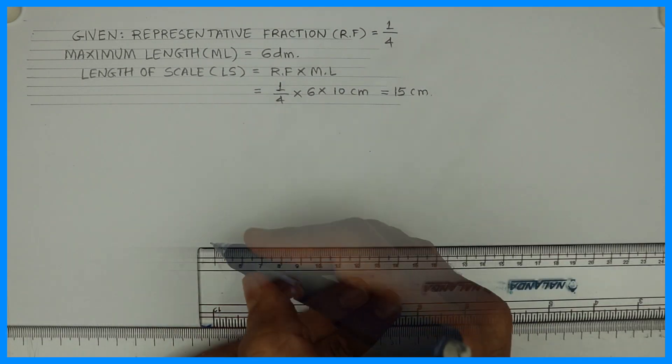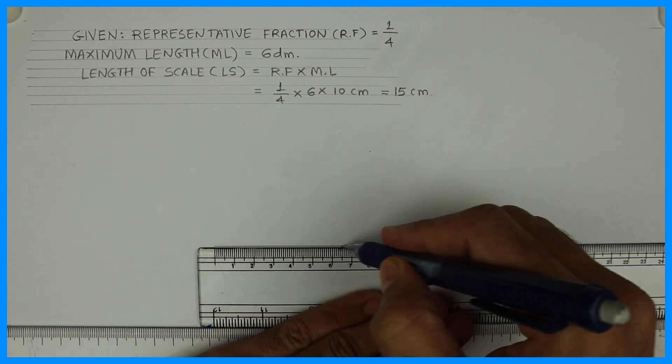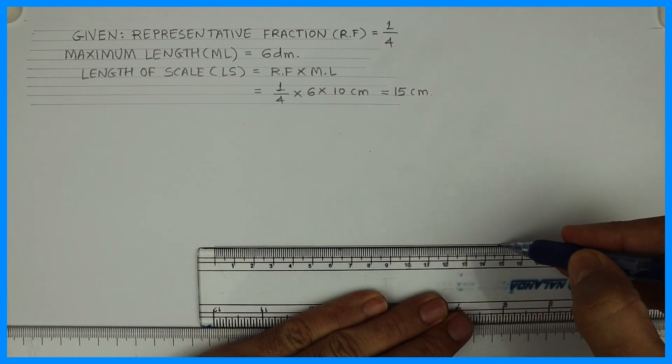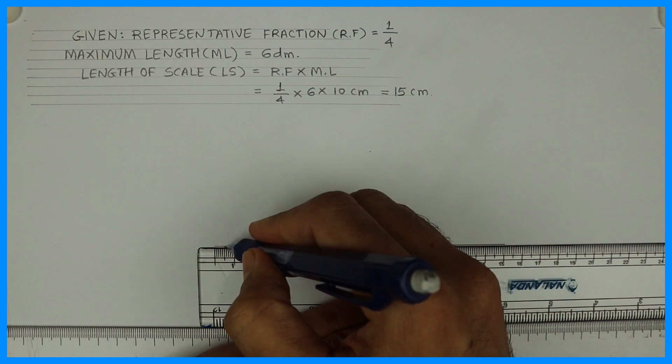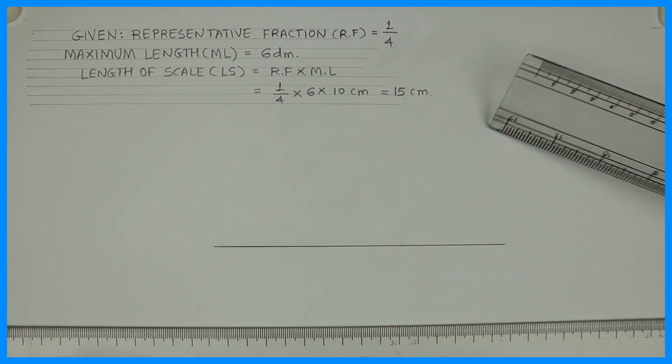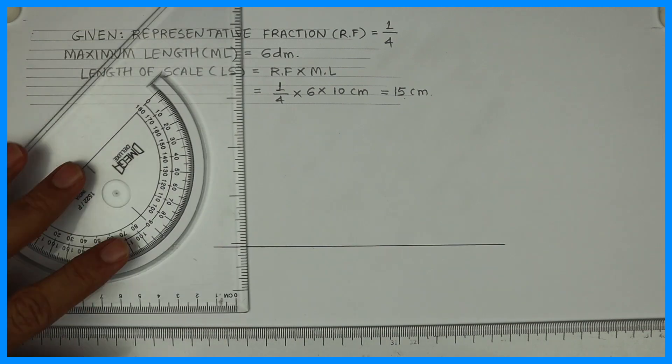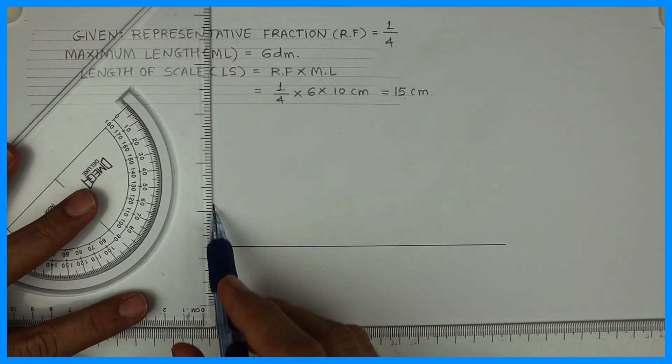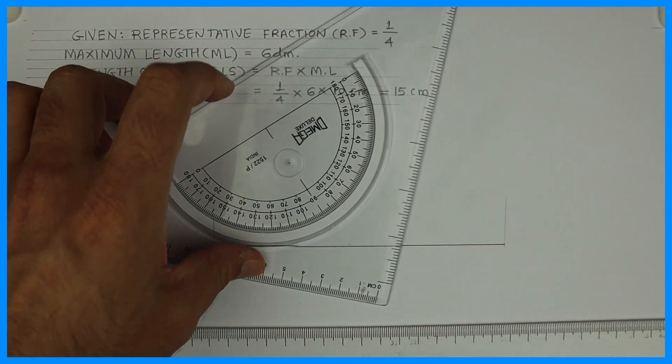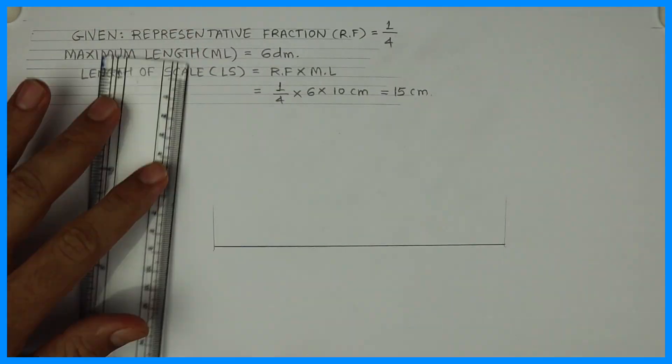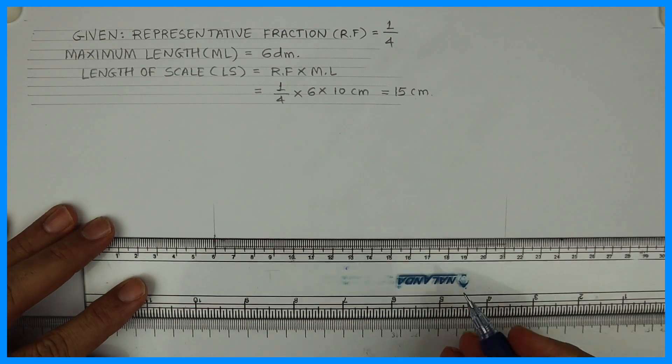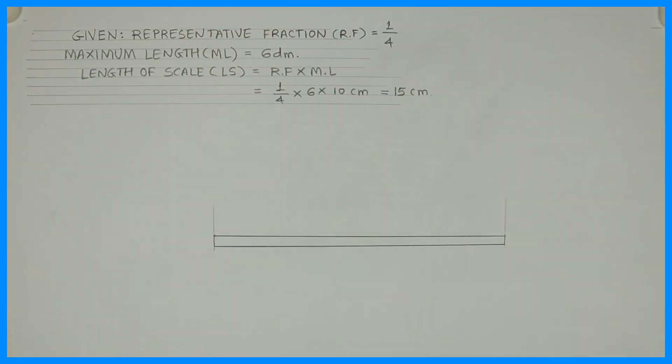So you draw 15 centimeter in your compass. You take 15 centimeter on your scale or on your compass and you draw a line. After that now we'll take height 5 millimeter. Now remember one thing I can take height 5mm, 6mm, 8mm, 9mm, 10mm, 12mm, whatever we want. But I'm taking 5mm.